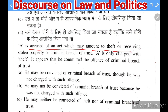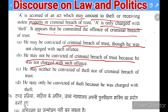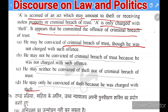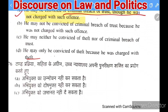Next question: A is accused of an act amounting to theft or receiving stolen property or criminal breach of trust. A is only charged with theft, but it appears he committed criminal breach of trust. Options: (A) he may be convicted of criminal breach of trust though not charged, (B) he may not be convicted as not charged, (C) convicted of neither, (D) only convicted of theft. The right answer is A — he may be convicted of criminal breach of trust.